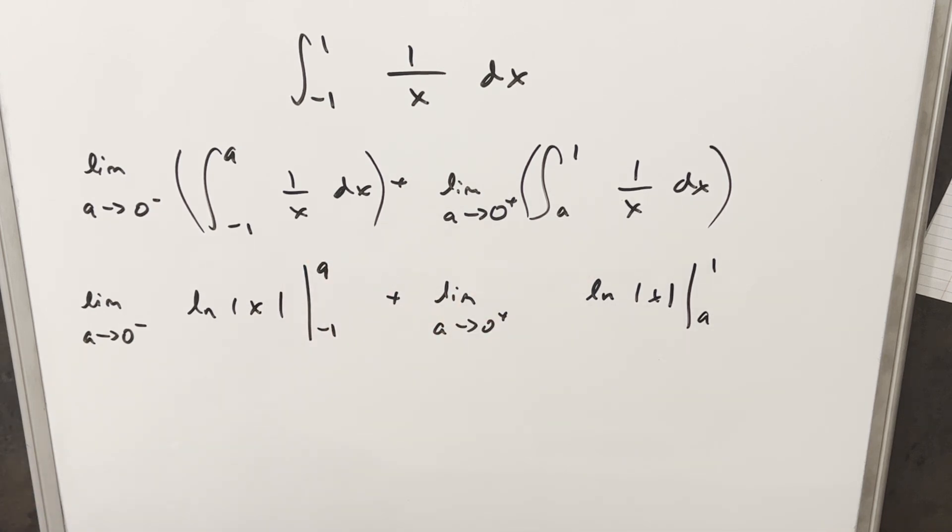So let's just look at the first one first. So we're going to have here natural log of a, absolute value of a, minus ln absolute value minus 1. It's just going to be ln of 1. So this piece is going to 0, and we still have a limit on this thing.